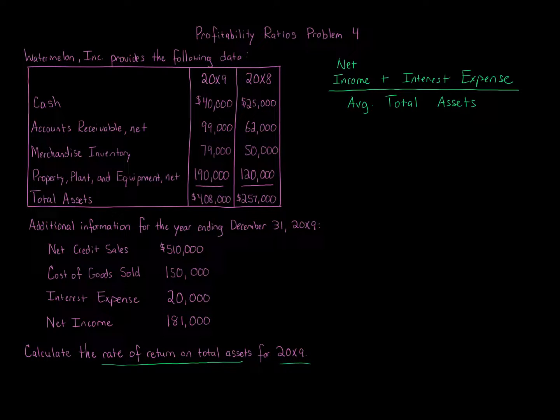Now we have net income, $181,000, plus interest expense, we got that, $20,000. Right there, moving along. So we've got our numerator, which is going to be $201,000. I can show that later on in a moment. That's going to be our numerator.